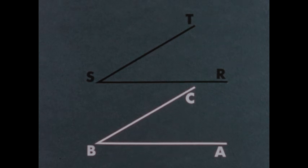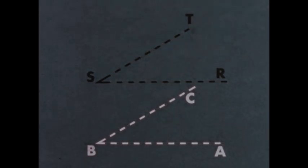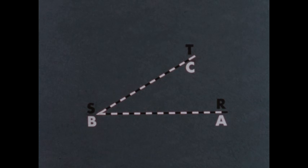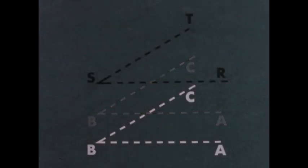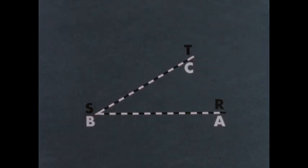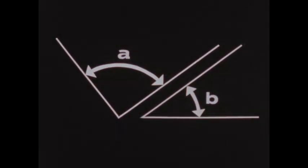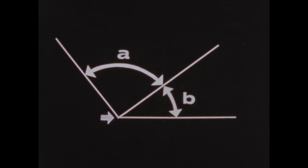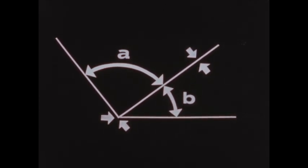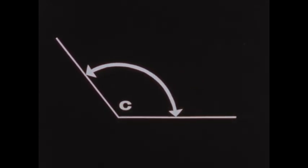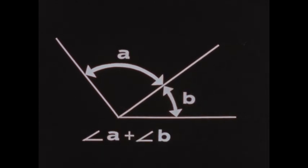Now that we've seen how to name and measure angles, we can compare two angles. If the sides of angle ABC correspond exactly to the sides of angle RST, the angles contain the same number of degrees. Two angles are equal if their sides can be made to exactly correspond, or as we say, coincide. Two angles may be added by placing them side by side, so that the vertex and a side of one coincide with the vertex and a side of the other, and the common side is between the angles. When angle A and angle B are added together, a new angle is formed — angle C. Angle A plus angle B equals angle C.